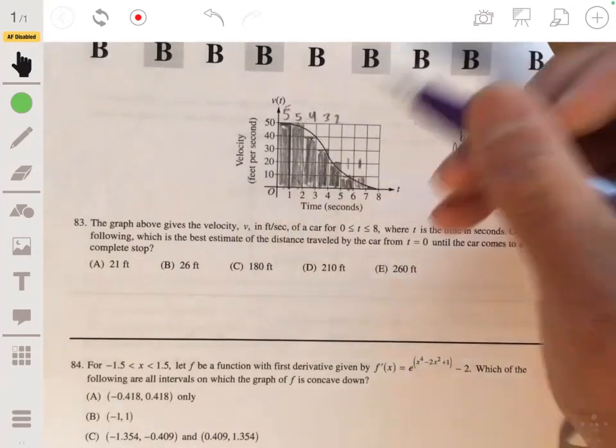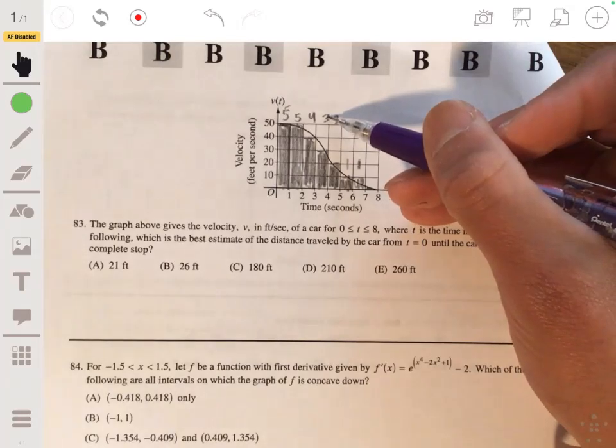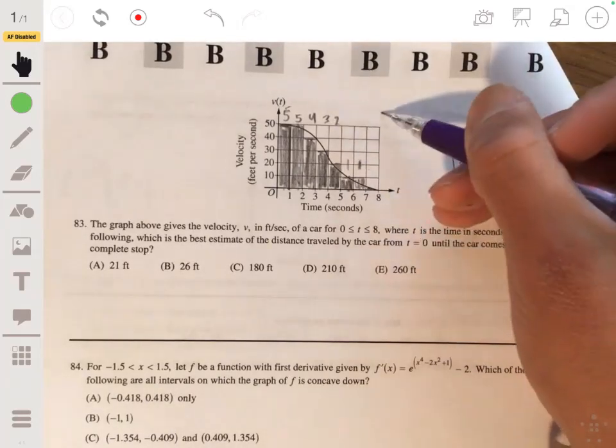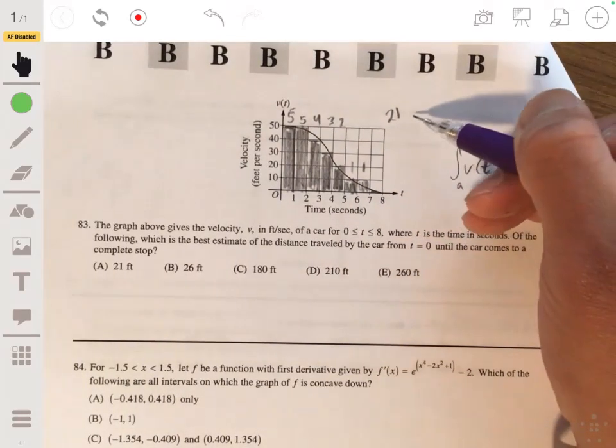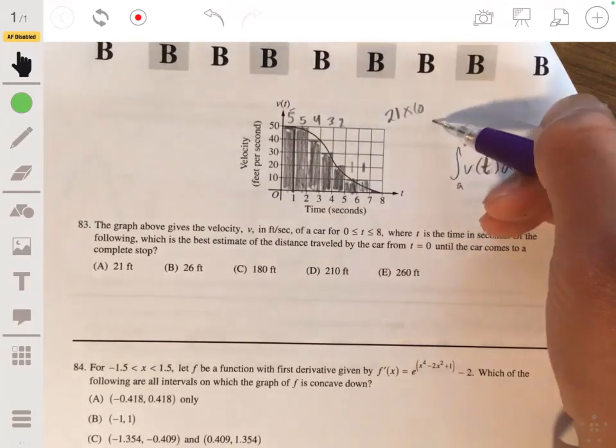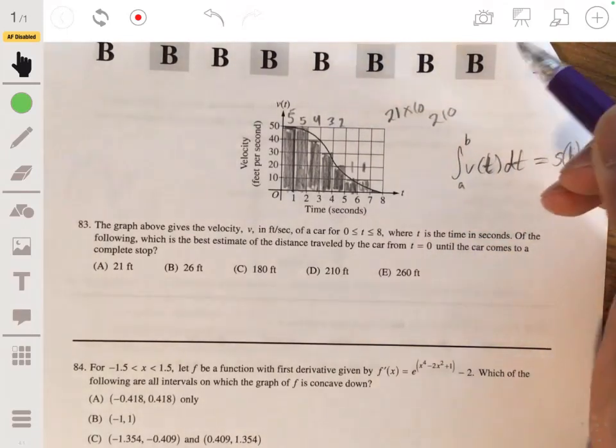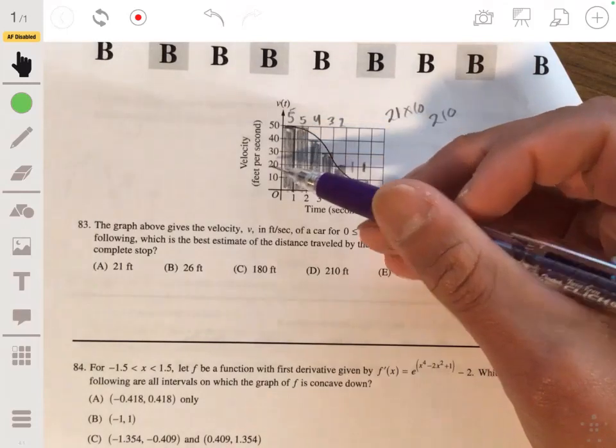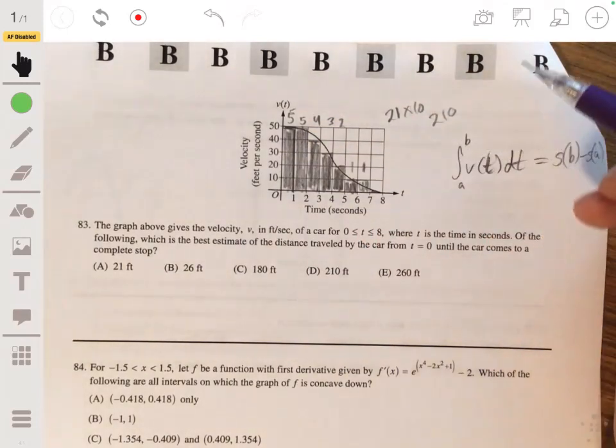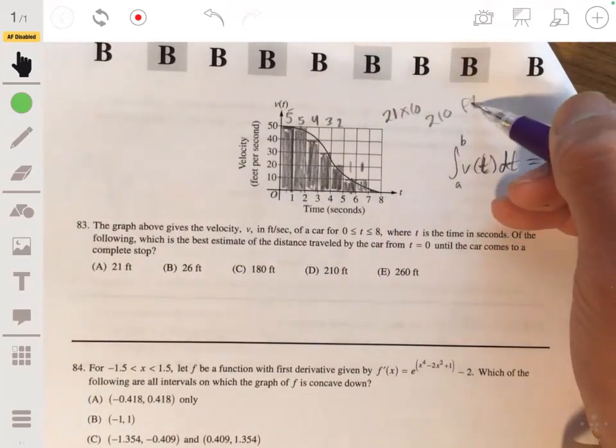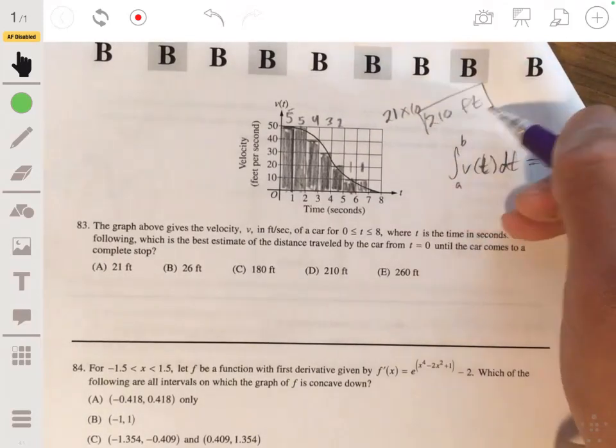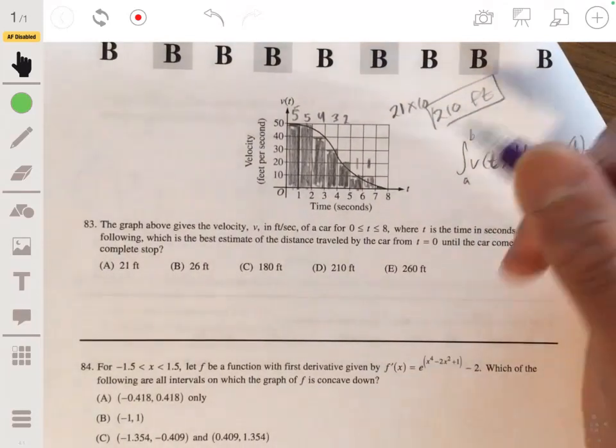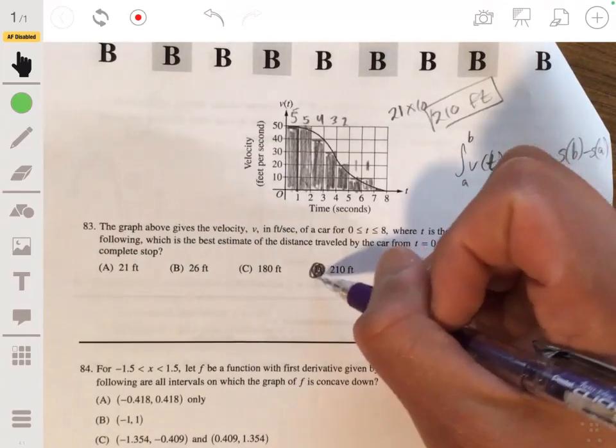So again we're going to multiply our answer by 10, but we have 5, 10, 14, 17, 18, 19, 20, 21, times 10, so we have 210 square units. This is integrating velocity, basically 210 feet approximately, and our answer would be d.